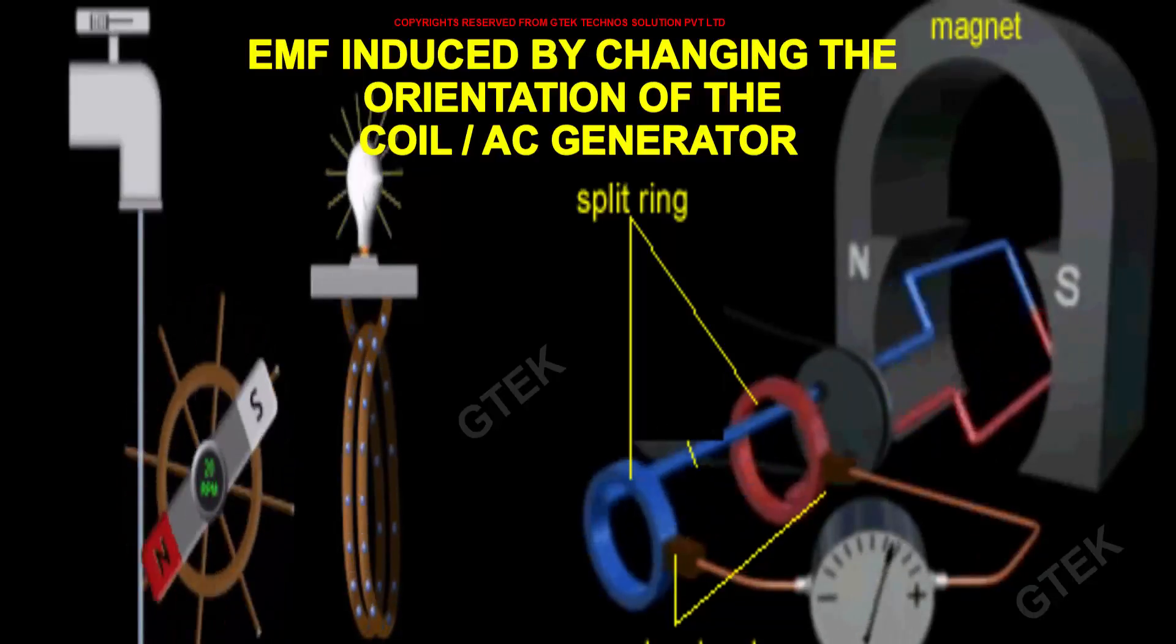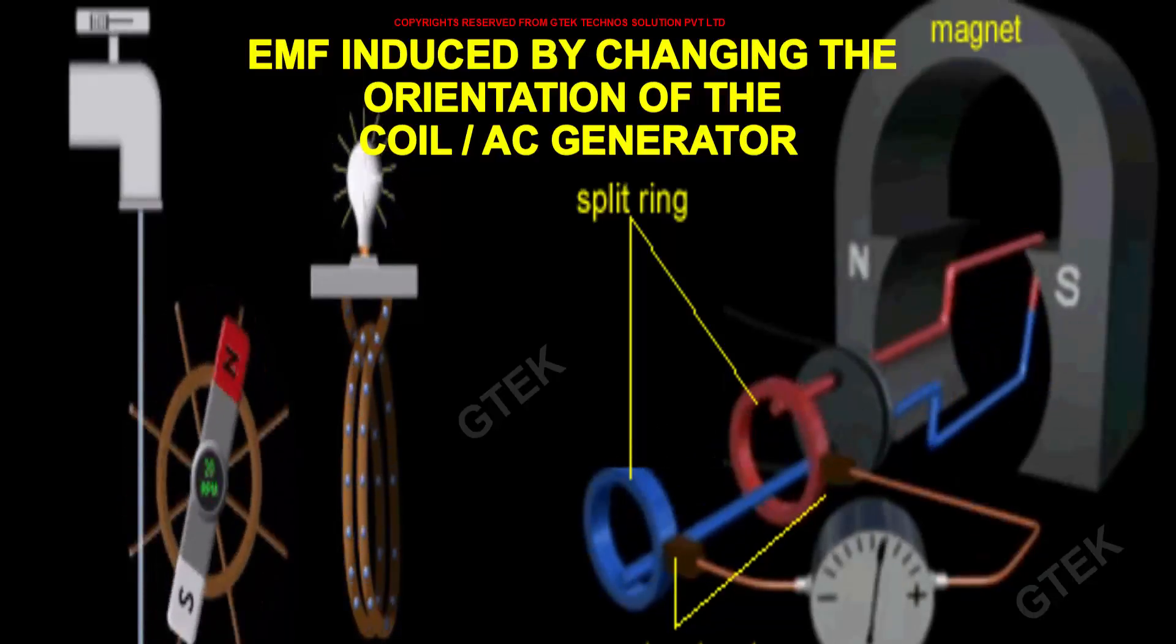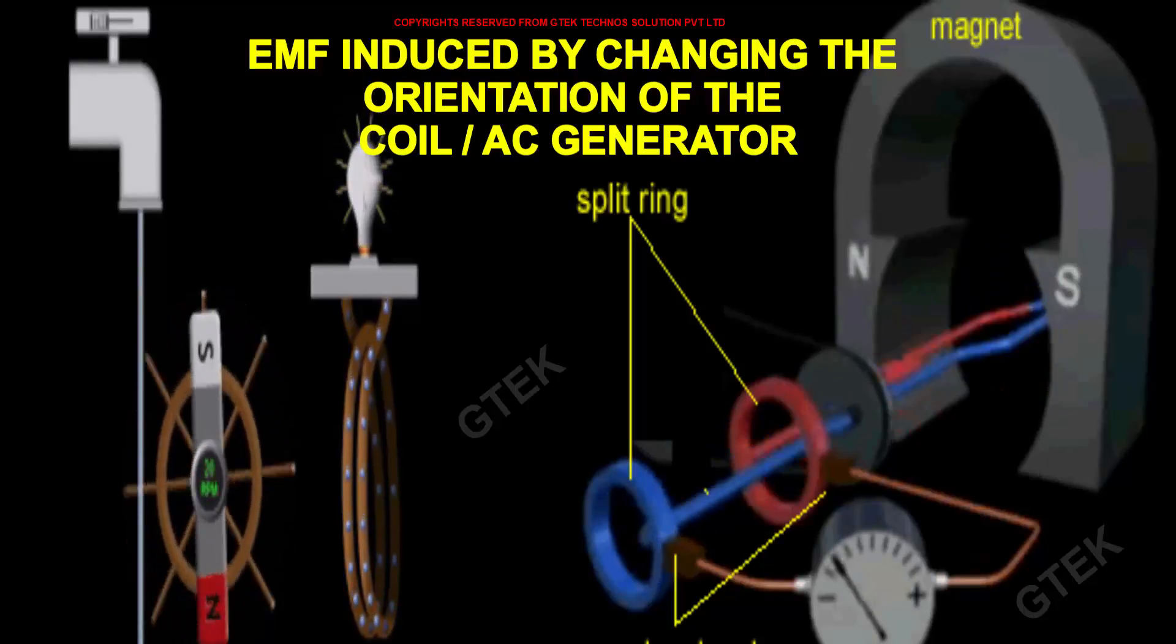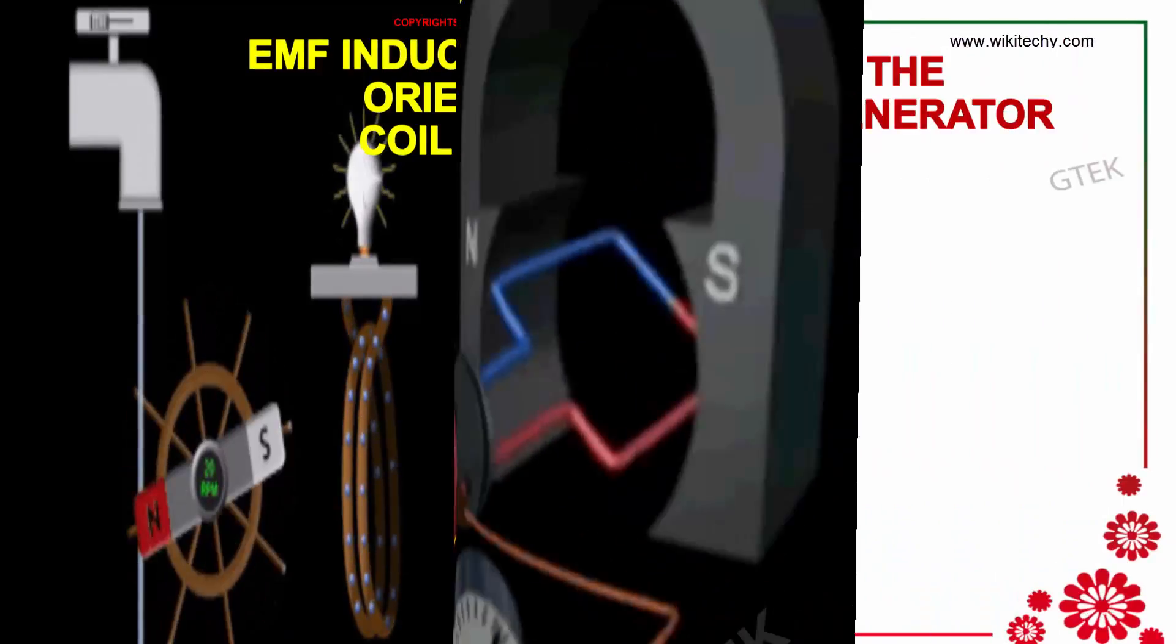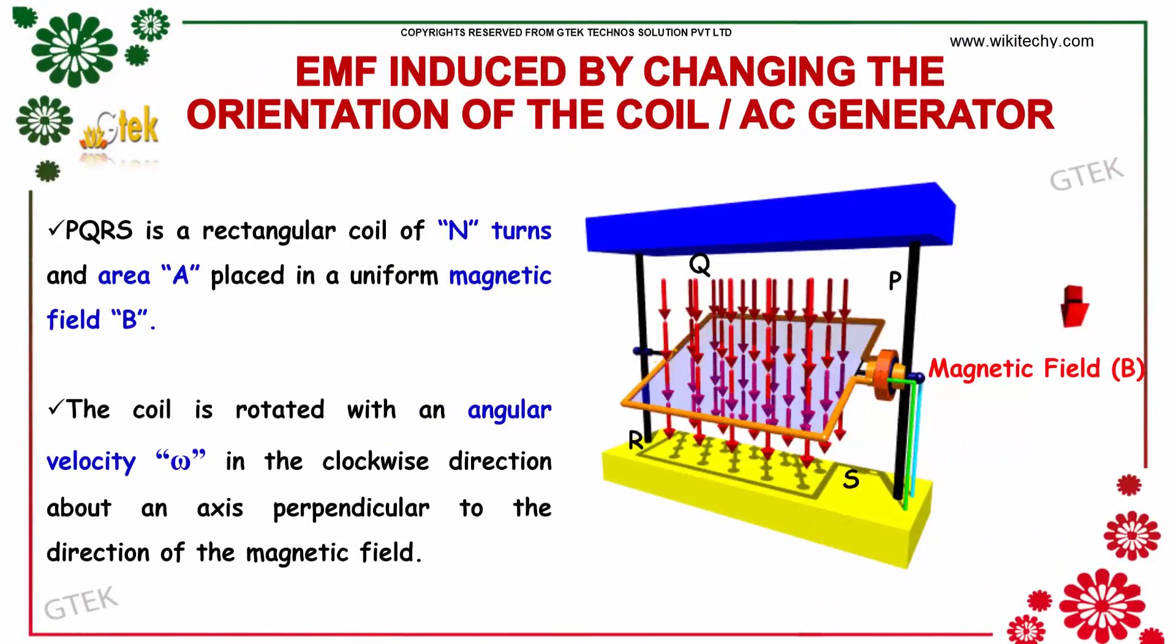Let's talk about the EMF induced by changing the orientation of the coil and AC generator. So here you got the rectangle coil P, Q, R and S, which is of N turns and area A and placed in a uniform magnetic field B. The coil is rotated with an angular velocity of omega in the clockwise direction, about an axis perpendicular to the direction of the magnetic field.